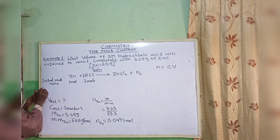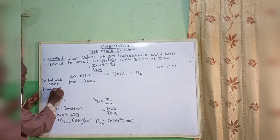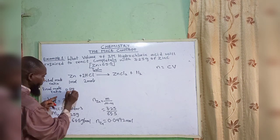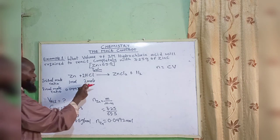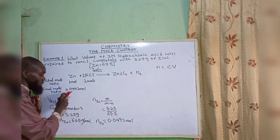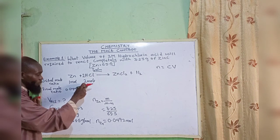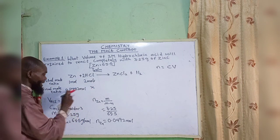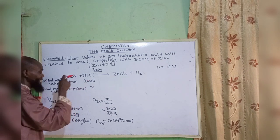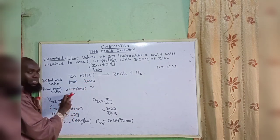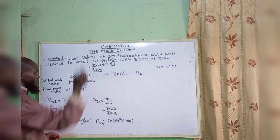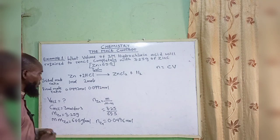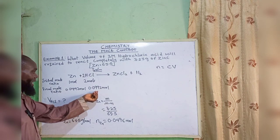Now come back to the mole ratio. Our final mole ratio: since zinc is 0.0492 mole, and the initial ratio is 1 mole zinc to 2 moles HCl, we put x for HCl. So 1 times x equals 0.0492 times 2, meaning two moles of HCl gives 0.0992 mole. So the amount of HCl is 0.0992 mole.